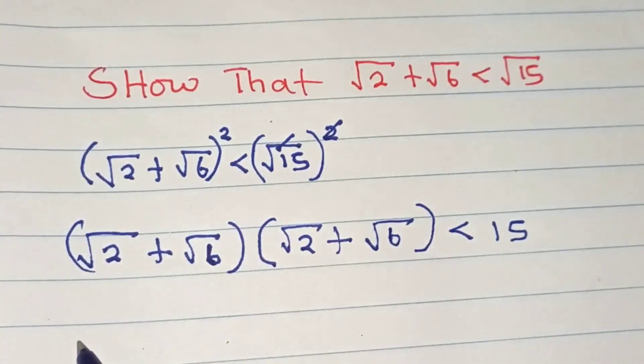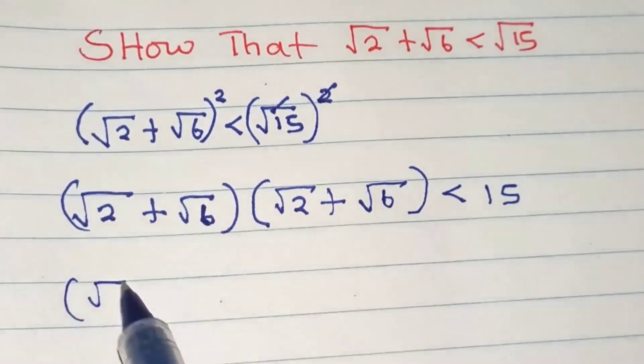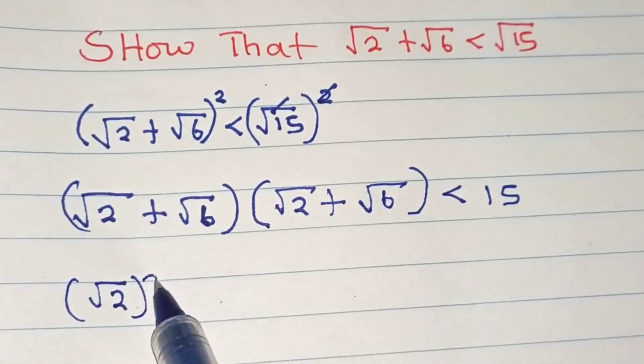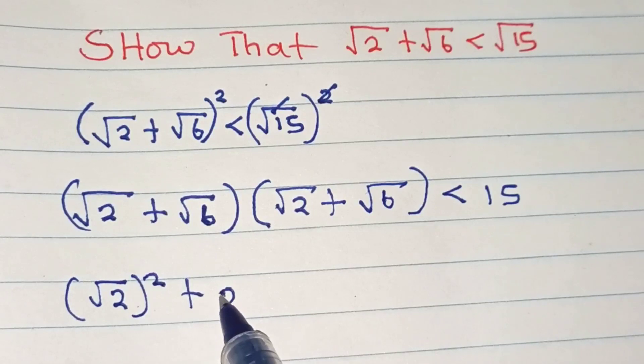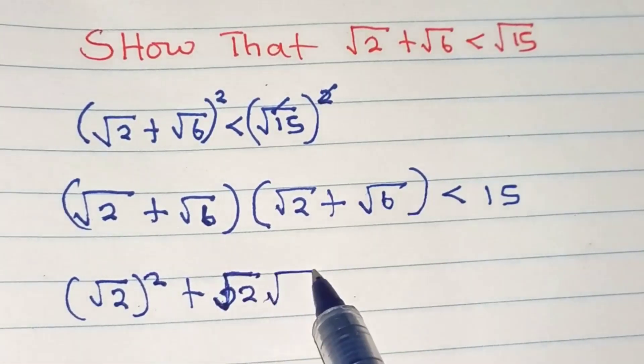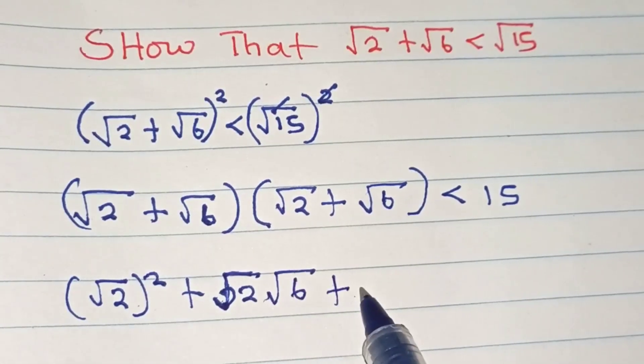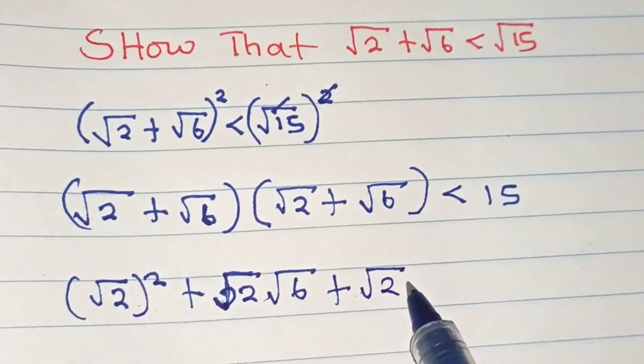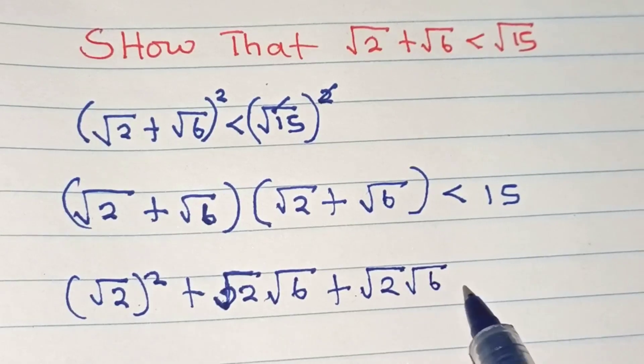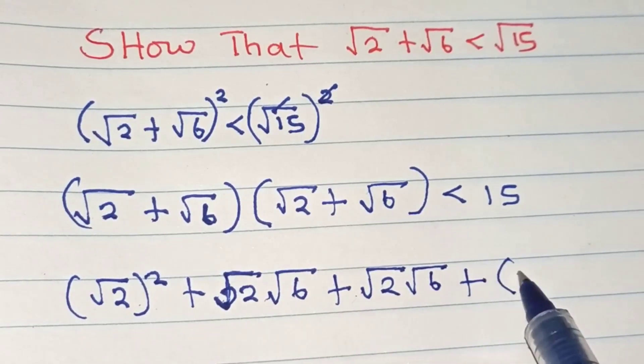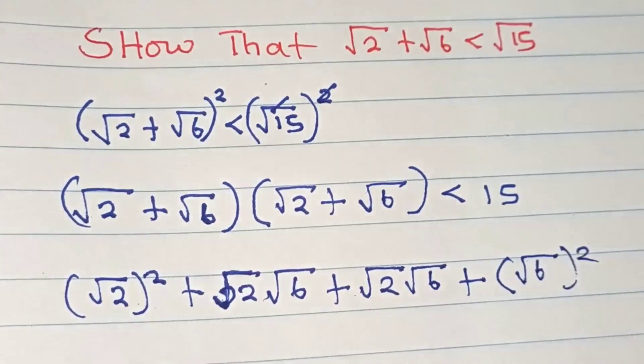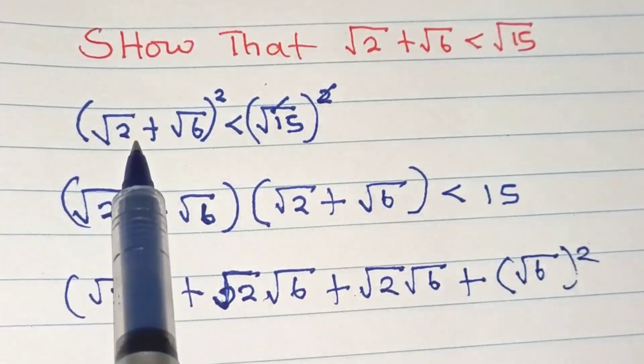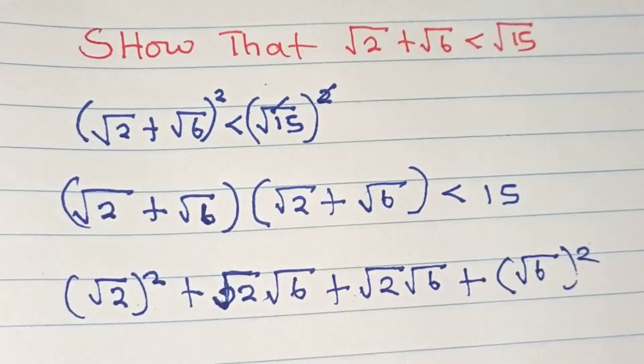When we expand the bracket, root 2 times root 2 gives us root 2 squared, plus root 2 times root 6, plus root 2 times root 6 again, plus root 6 squared. This is what we get when we expand the bracket.